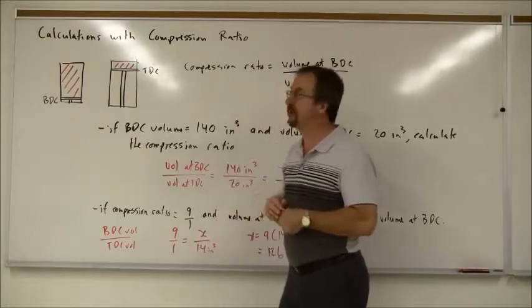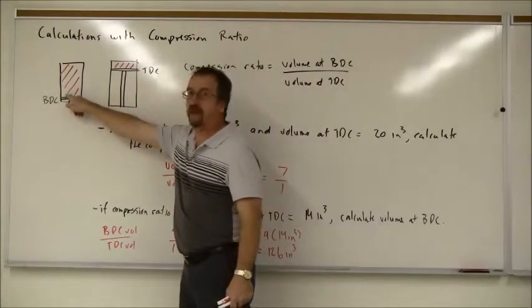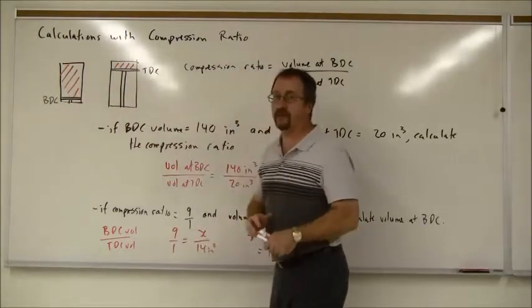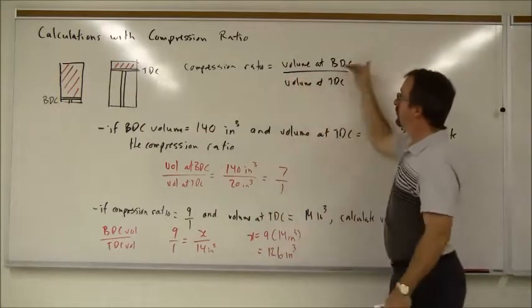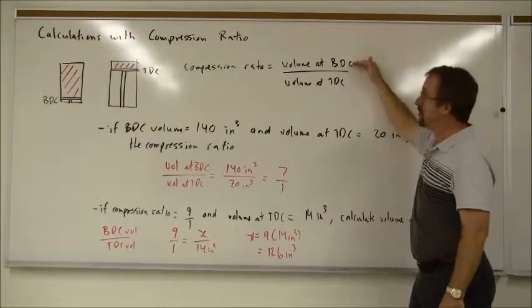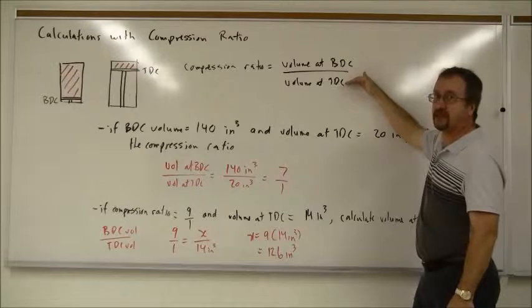Our compression ratio compares the volume of bottom dead center to the volume of top dead center. So we put the BDC value at the top, and the TDC, top dead center, on the bottom.